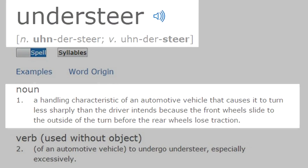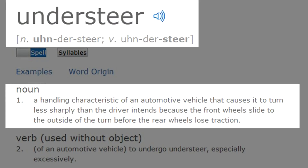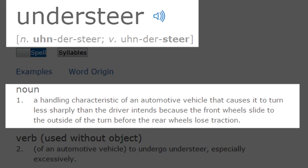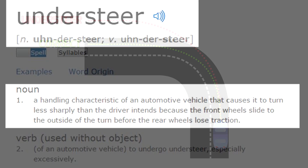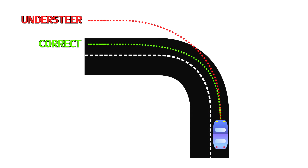Now let's start things off with a brief definition of each condition, starting with understeer. Understeer, which is also called a push or being tight, is a handling characteristic of an automotive vehicle that causes it to turn less sharply than the driver intends because the front wheels slide to the outside of the turn before the rear wheels lose traction.